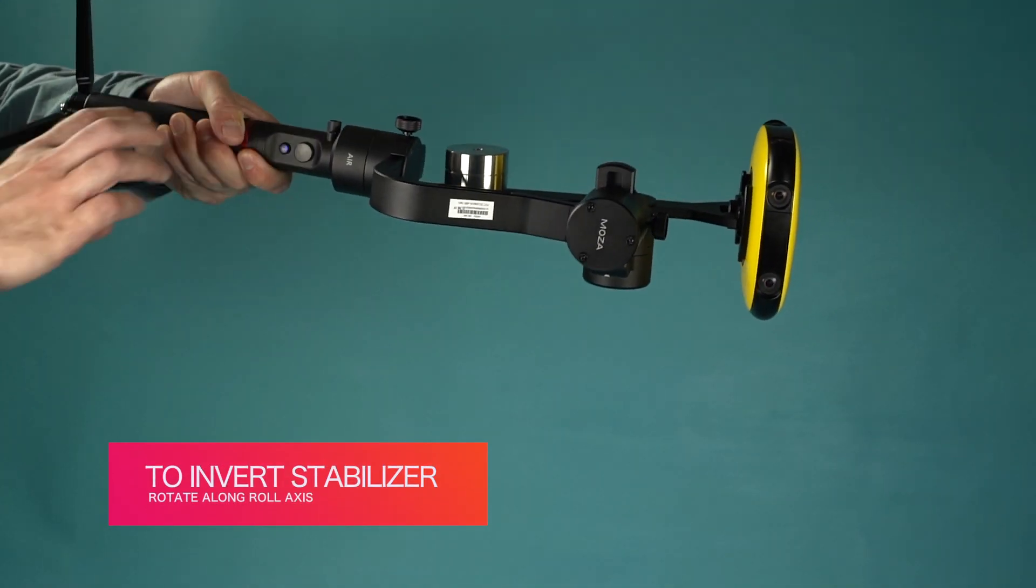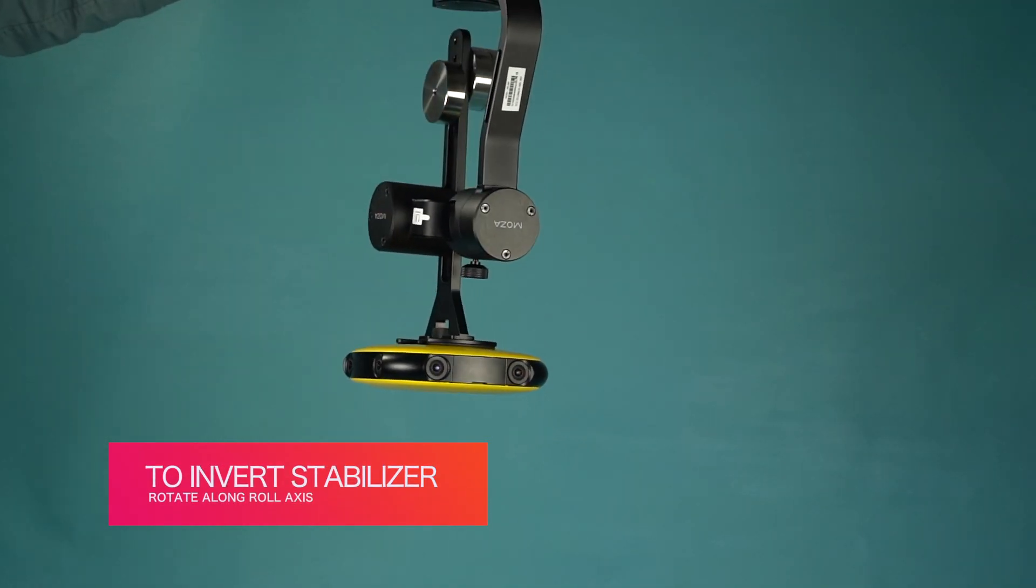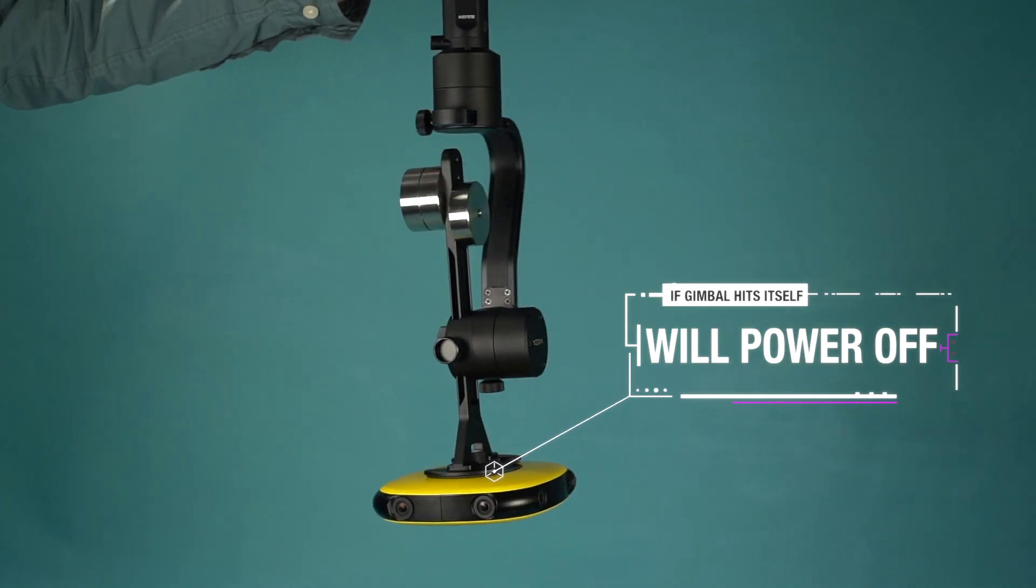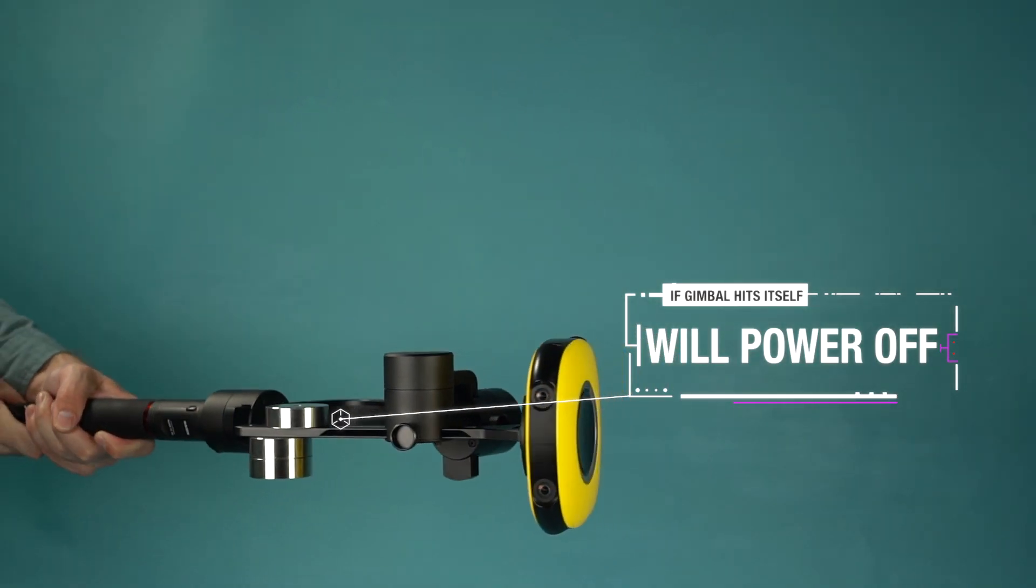To invert the stabilizer, rotate it along the roll axis. If the gimbal comes in contact with itself, the motors will eventually power off.